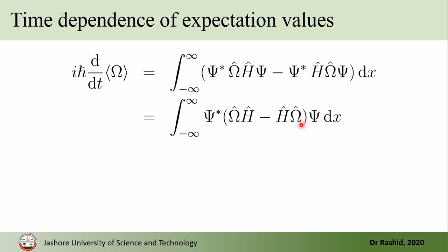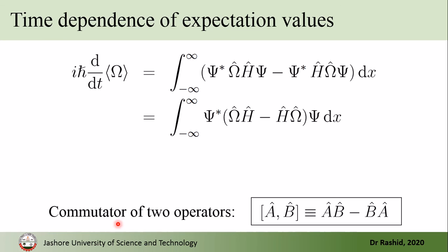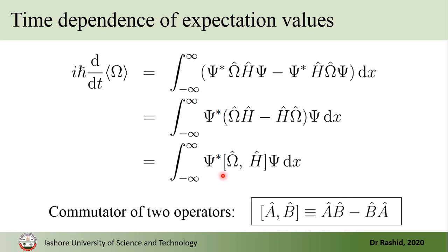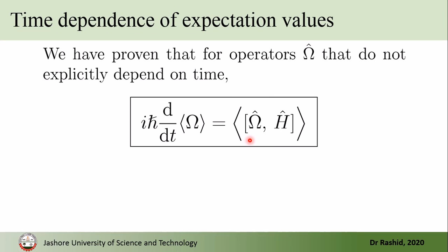This is nothing but the commutator of omega-hat and H-hat. The commutator of two operators is written and defined like this. So we have this result. If we recall the definition of the expectation value, this is nothing but the expectation value of this commutator. Therefore, we write: i-h-bar d/dt of the expectation value of omega equals the expectation value of the commutator of omega-hat and H-hat.